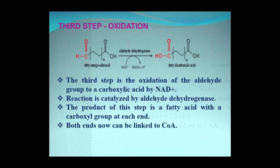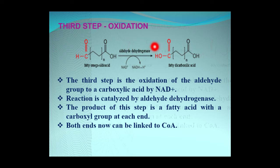In the third step of omega oxidation of fatty acid, the oxidation of the aldehyde group occurs to form a carboxylic group, catalyzed by the enzyme aldehyde dehydrogenase. The end product of this reaction is a fatty acid that possesses a carboxylic group at both of its ends. This fatty acid is then linked to coenzyme A for further oxidation.